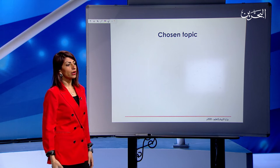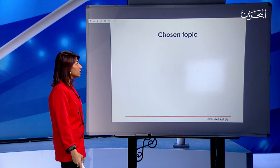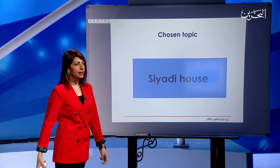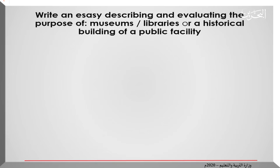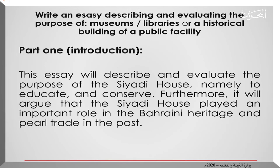So what historical place are we going to write about together? I have chosen CID House, and I'm sure you all know how historical and magnificent it is. Of course, you could choose any other historical place. We're going to write an essay describing and evaluating the purpose of museums, libraries, or any historical building or public facility. Are you ready? Let's move to the introduction.